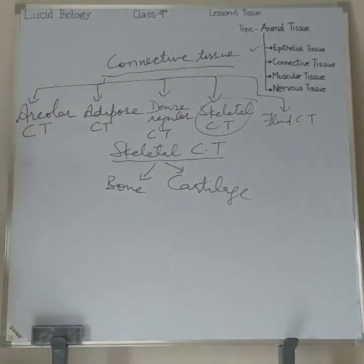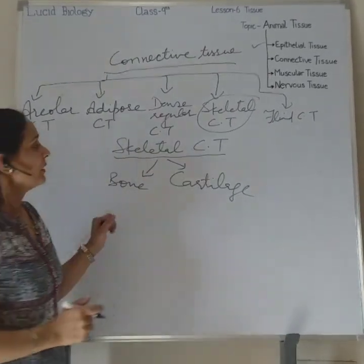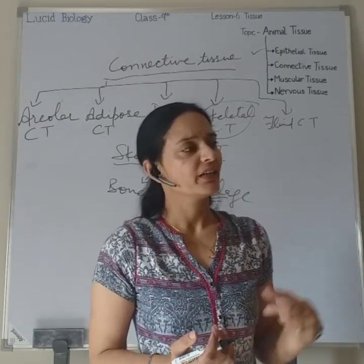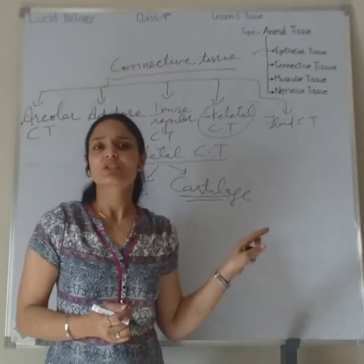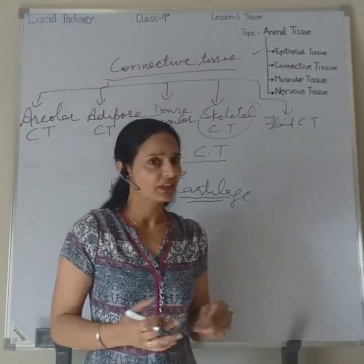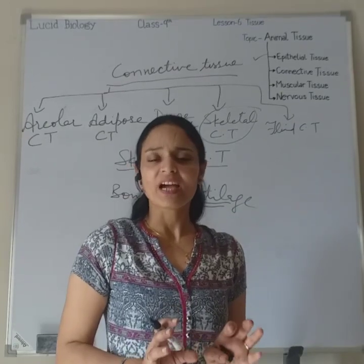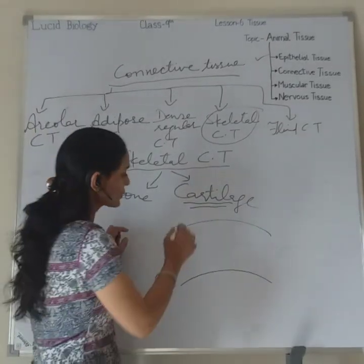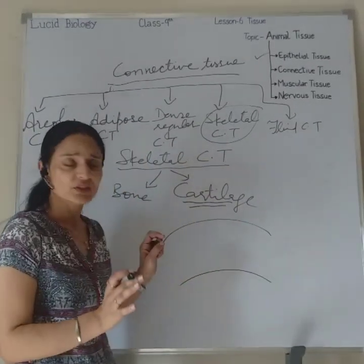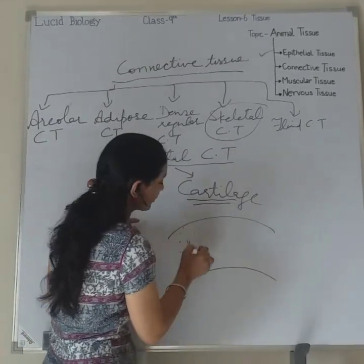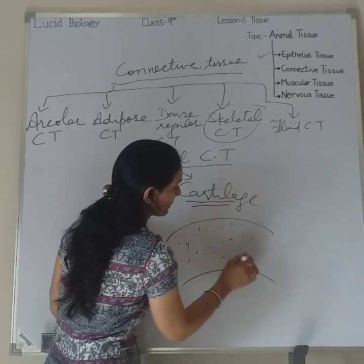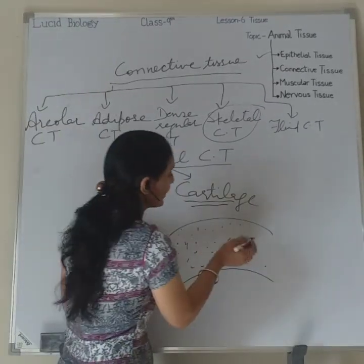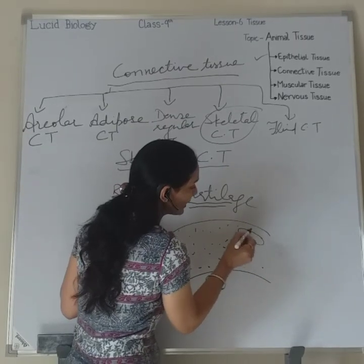Now we are going to study these two in detail. First, let us study cartilage. Cartilage is solid and firm — it is elastic, similar to cheese. It is firm but has some elasticity. To explain the structure, cartilage has widely spaced-out cells in its matrix. Here I'm showing a dotted structure representing the matrix, which is made up of protein.